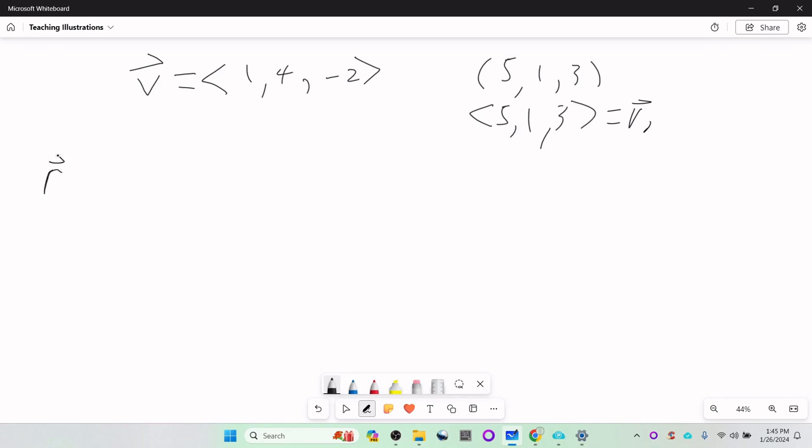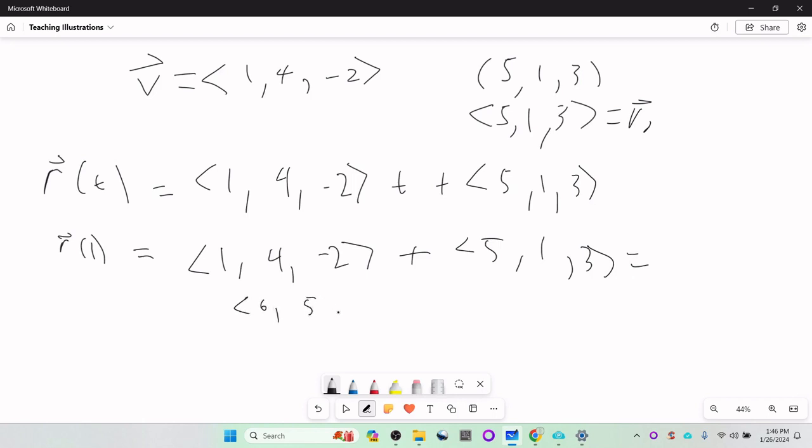We can't add points to vectors, so we'll change this into the vector 5, 1, 3. And we can call that R-naught. Then we just put the pieces together. R of T is V times T plus 5, 1, 3. And to get other points, you just plug in. R of 1 would be 1, 4 minus 2 times 1 plus 5, 1, 3 is 6, 5, 1. If you do the same thing, plug in negative 1, you'll eventually get to the point 4, negative 3, and 5.